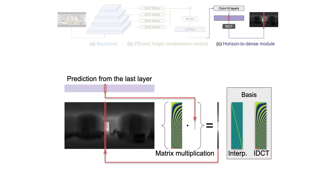The final horizon-to-dense module allows HohoNet to produce pixel-level output from the compact latent horizontal feature. A few one-dimensional convolution layers are employed to map the latent horizontal feature to output. A naive method is to view the output's channel dimension as height and apply interpolation if necessary. However, we find better accuracy by viewing the output's channel dimension in the frequency domain of the discrete cosine transform, and applying the inverse DCT to map the channel dimension to the target output height.